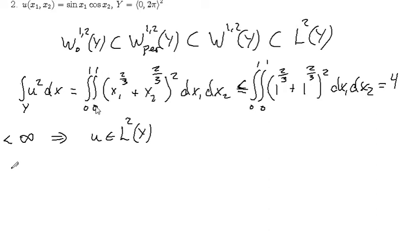Here is u, here is the expression for this function. We just insert this instead of u. Now we observe that in this square, which is just positive values of x₁ and x₂, these two functions are less than 1. Why is that? Because these are increasing functions from 0 to 1.